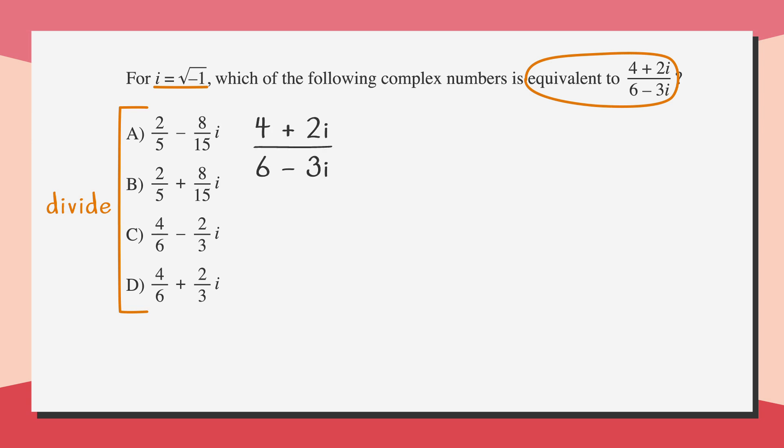We're dividing complex numbers. So, the first step is to find the conjugate of the denominator. The conjugate of 6 minus 3i is 6 plus 3i. Now, we'll place the conjugate into the numerator and denominator of a fraction and then foil the numerator and denominator. So, we get 24 plus 12i plus 12i plus 6i squared over 36 plus 18i minus 18i minus 9i squared.